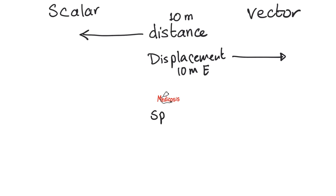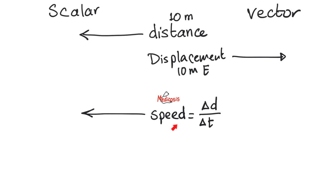Next, speed. What is speed? Speed is the change in distance over time. If I'm driving my car with a speed of 10 kilometers per hour, I didn't say east, west, up, or down — it has a magnitude only and no direction. So speed is a scalar quantity. Here's a little trick: speed equals distance over time. Distance is scalar and time is scalar — there's no such thing as 5 minutes east. Scalar divided by scalar gives you a scalar. So speed is a scalar.